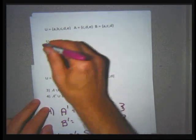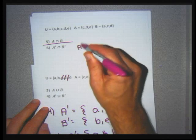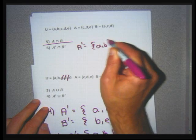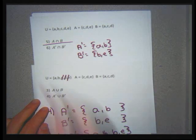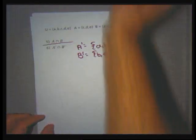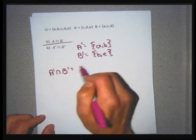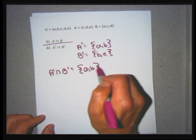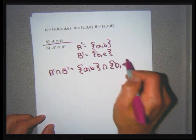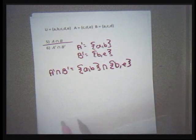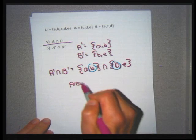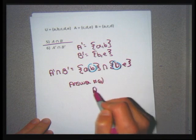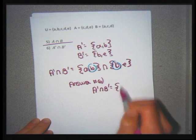Problem six: A prime intersection B prime. A prime is {A, B}, B prime is {B, E}. Intersection is what the sets have in common. A prime has A and B; B prime has B and E. What they have in common is just B. So A prime intersection B prime is the set containing just the letter B.